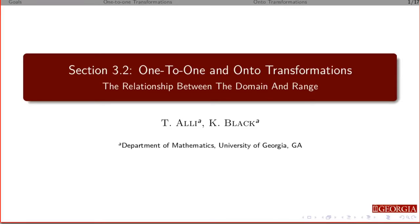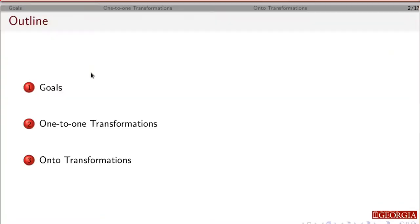This is section 3.2. We're going to look at a new set of definitions: one-to-one and onto transformations. We'll first take a look at the goals, do some examples, and then during those examples we'll define what it means to be a one-to-one transformation and then what it means to be an onto transformation.